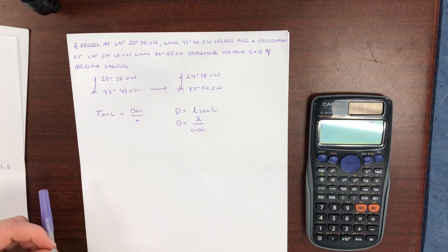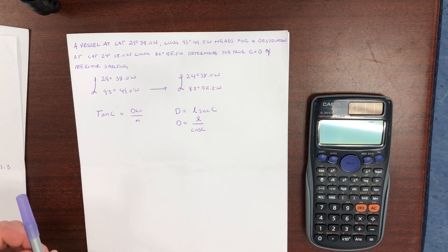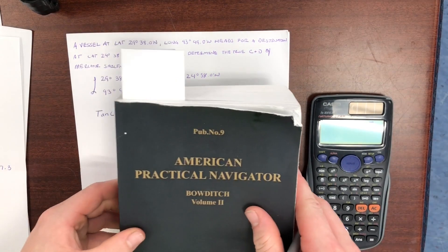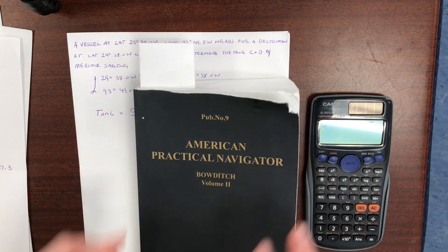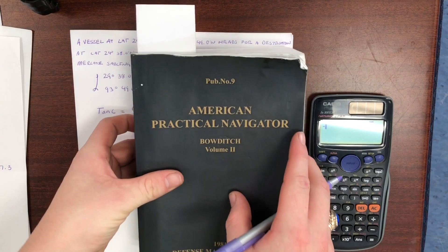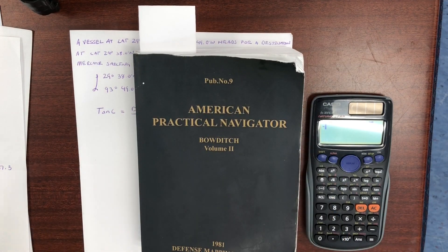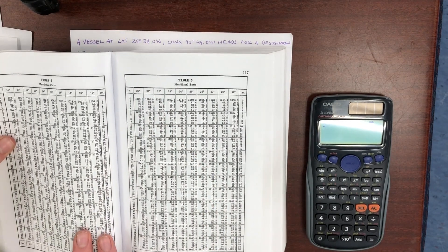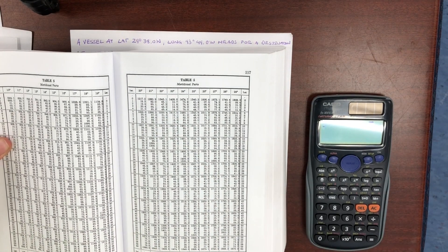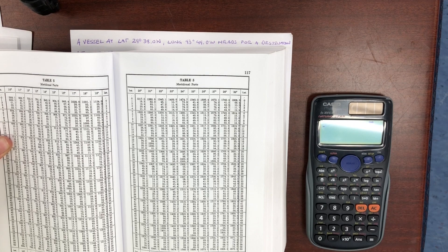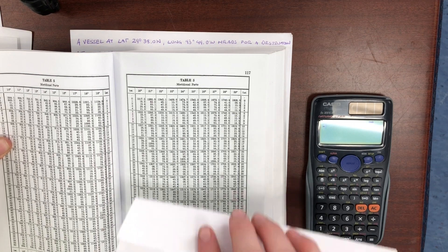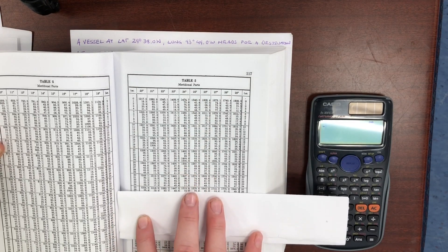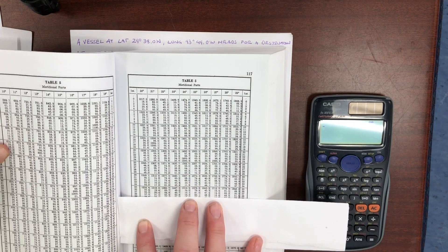So our first job, after we got all of our information down, is to find little m. You can find little m by opening up your American Practical Navigator. So I got my bowditch. I'm going to open up to table 5. Table 5 is the meridional parts table. And all we have to do is go down to 24 degrees and 29 degrees with 38 minutes of latitude.